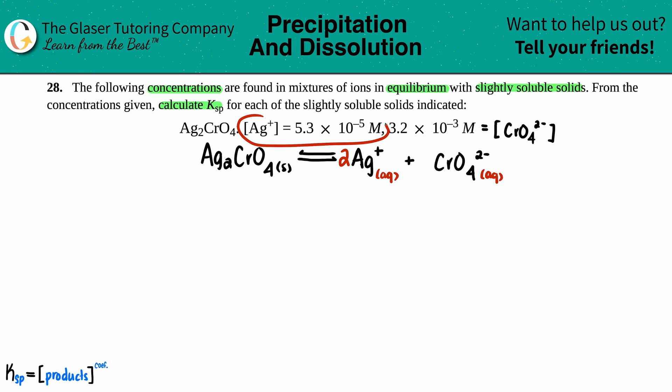Now let's just list what they told us. They told us that the silver concentration is 5.3 times 10 to the negative fifth. I just want to make a point here, guys, that there's two in the balanced equation, but this does not mean that you take this number and times it by two.